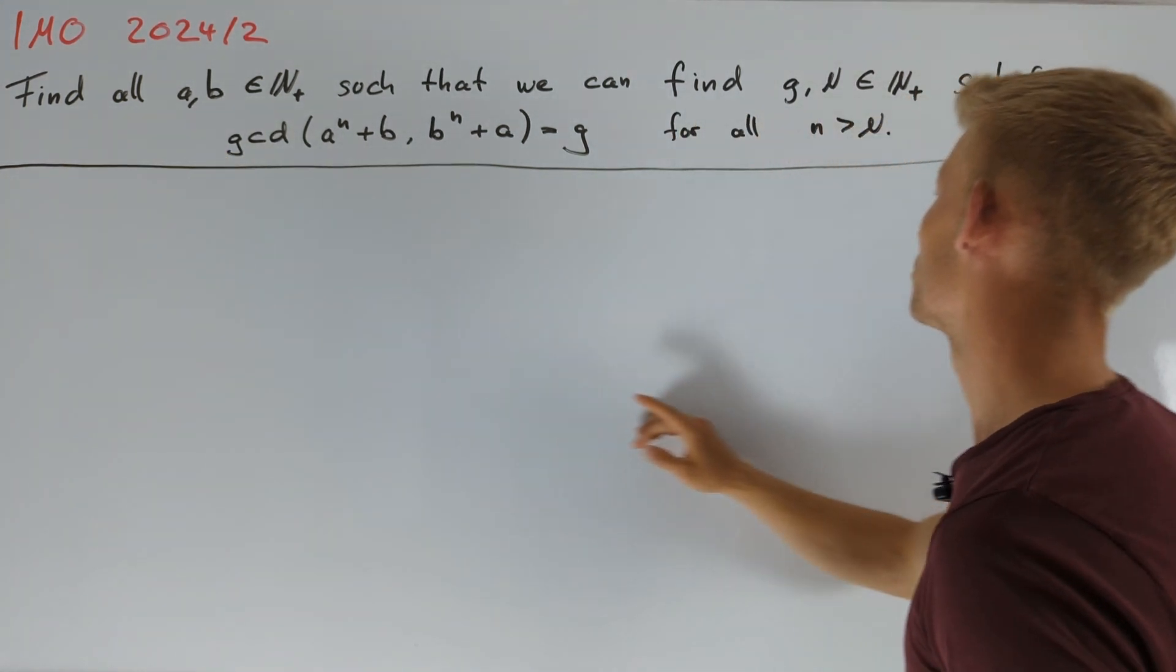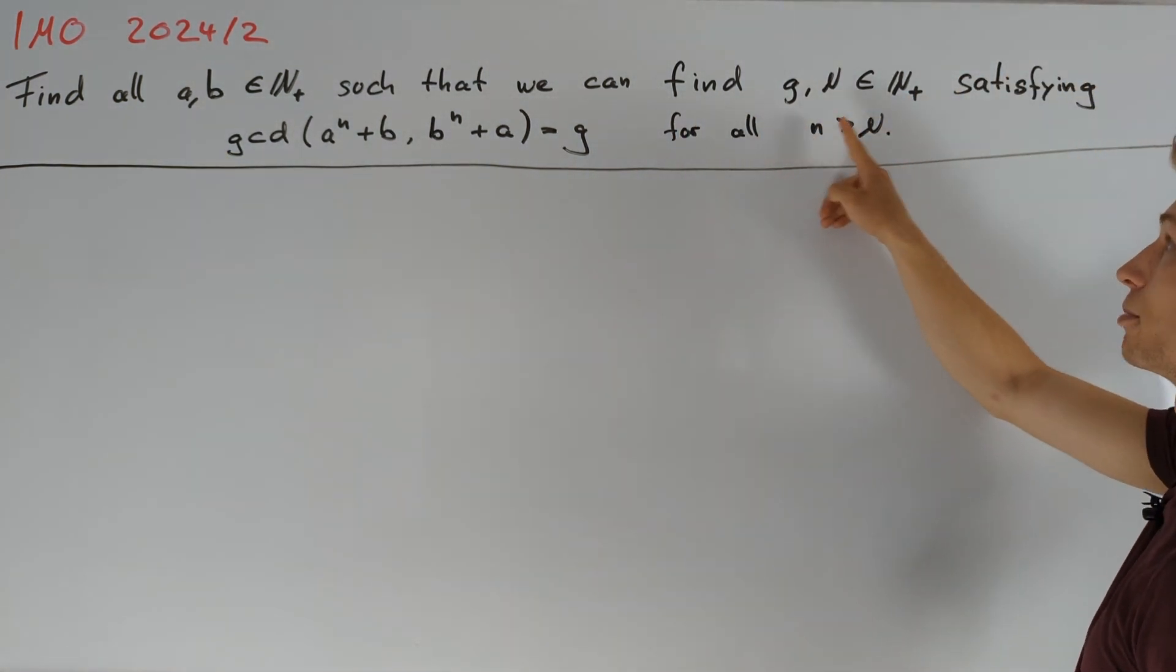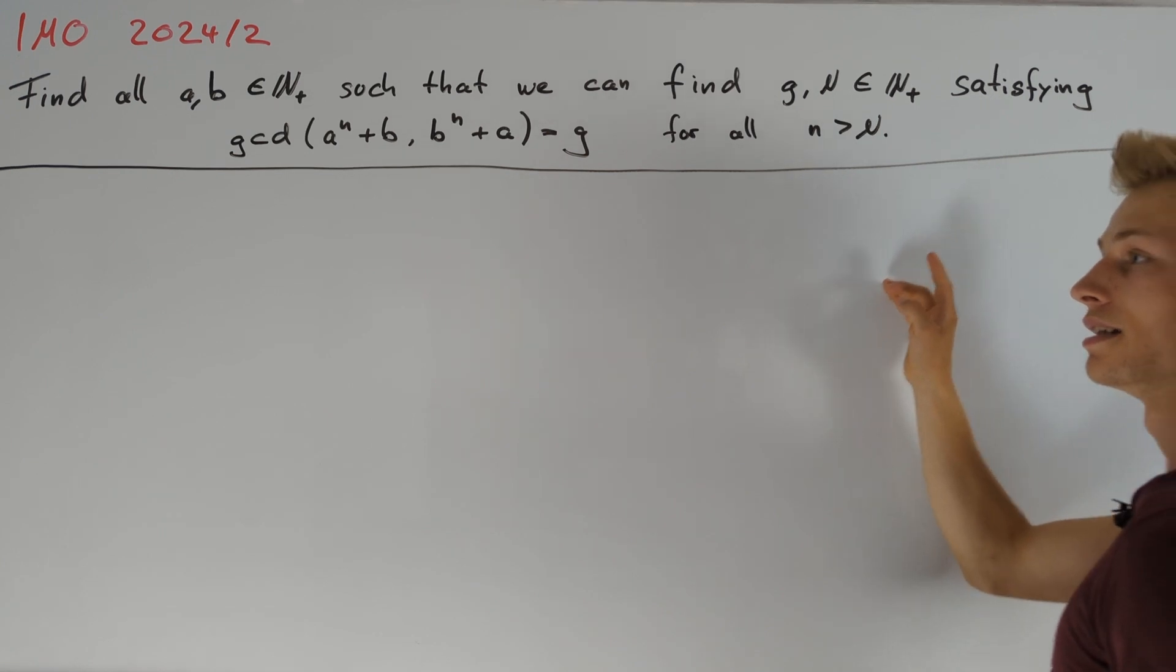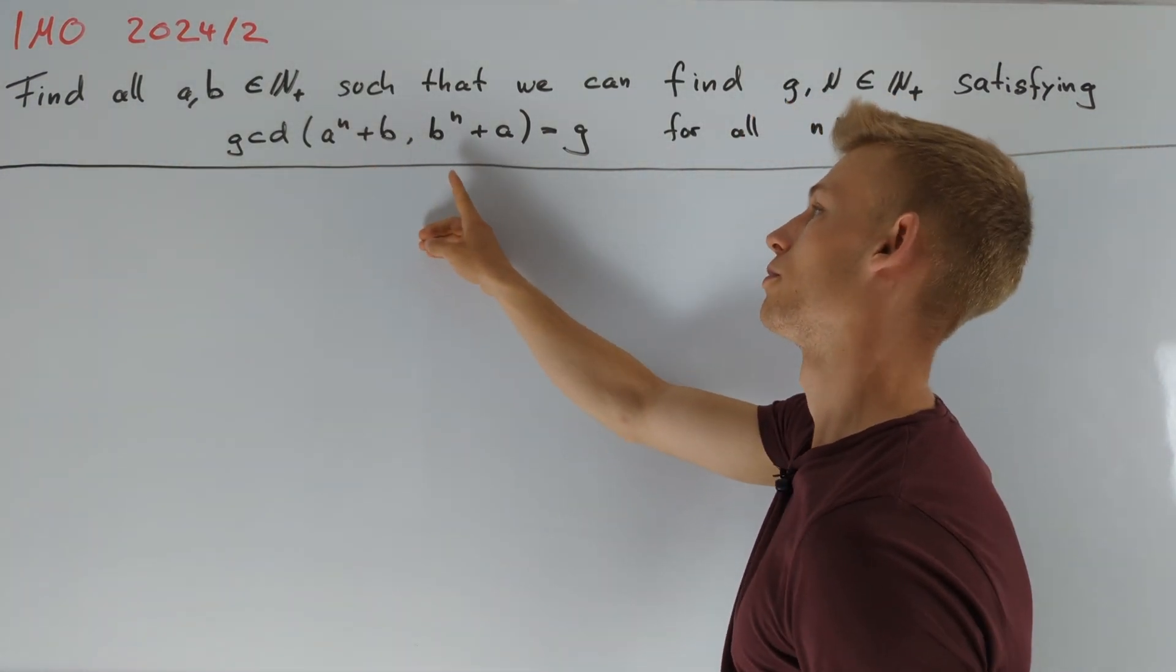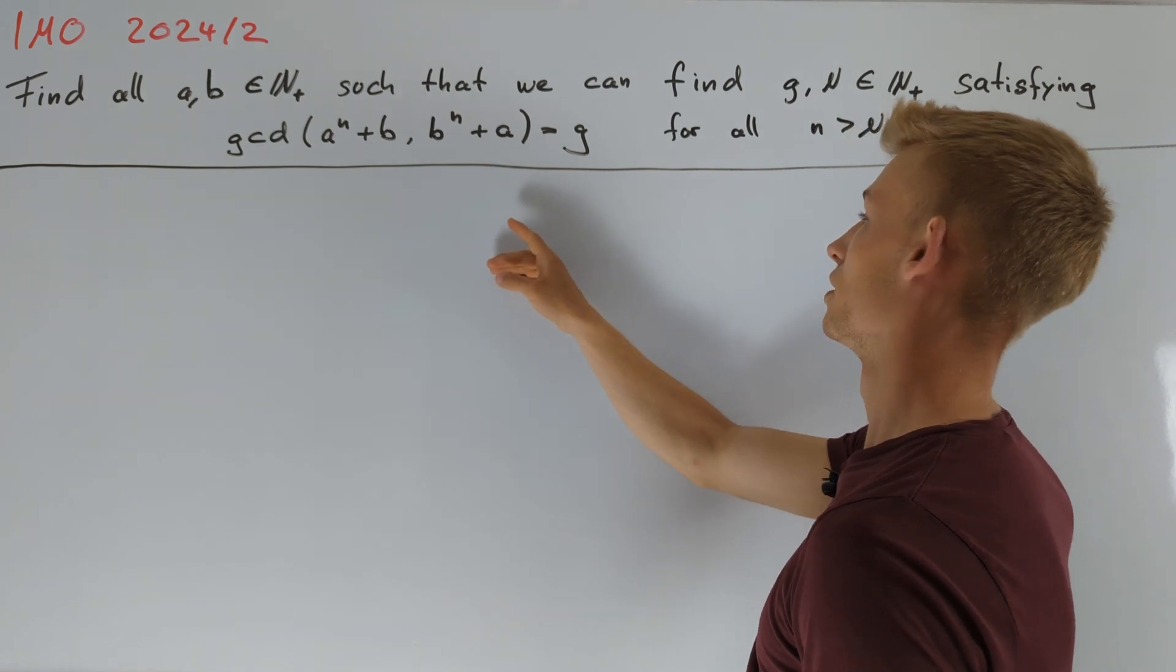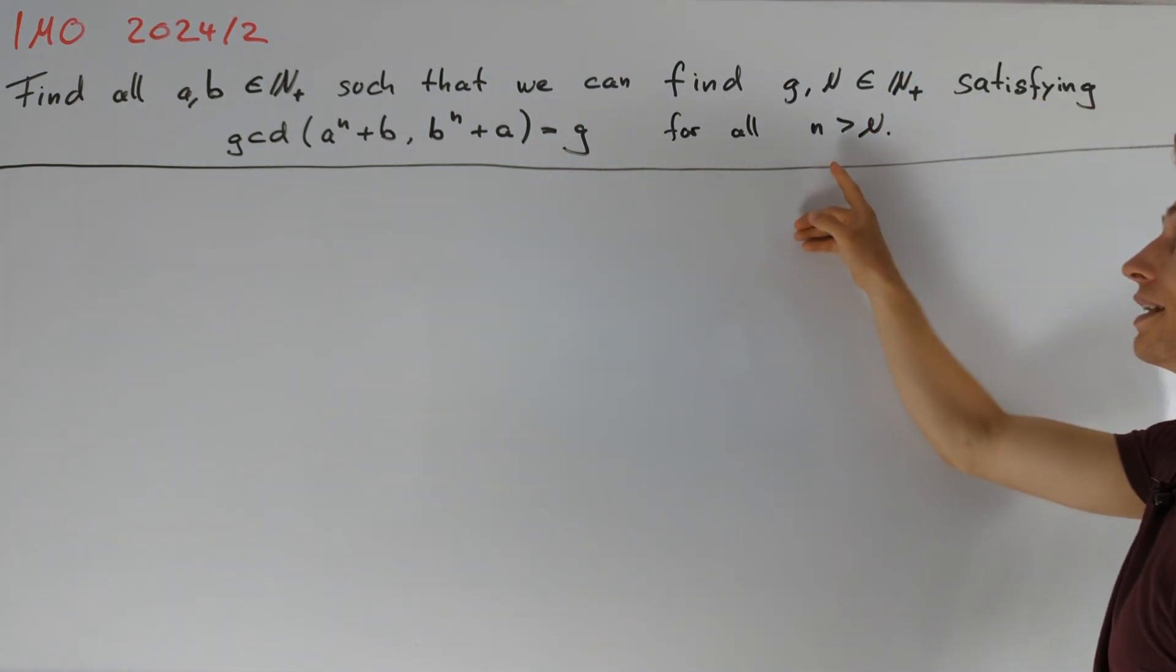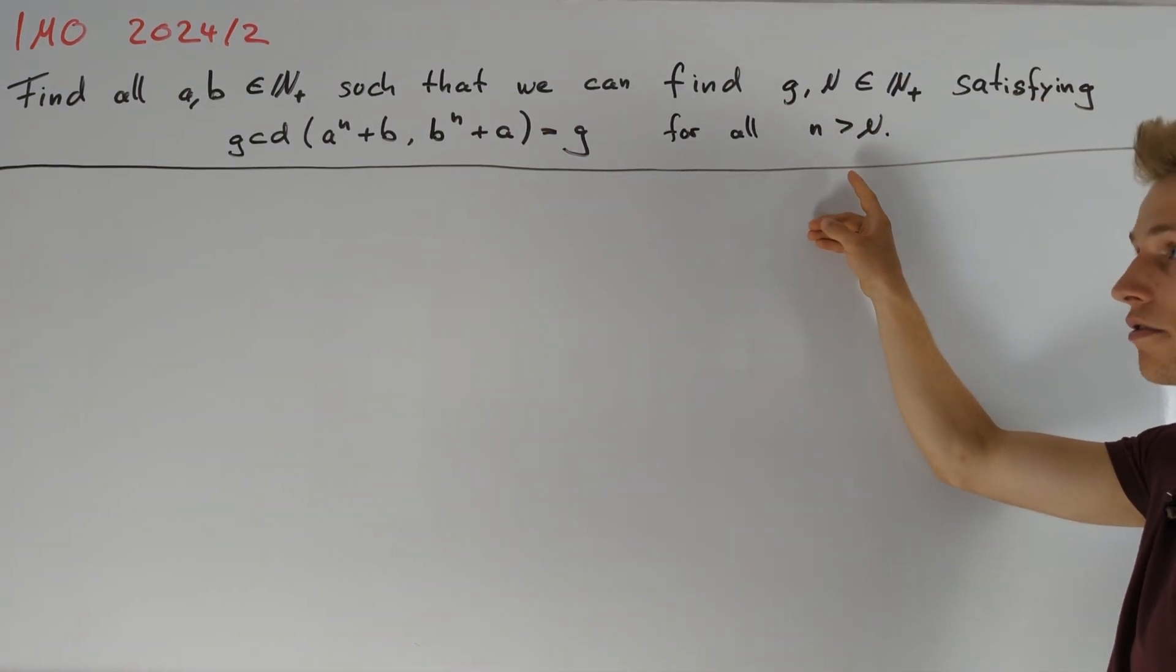such that we can find positive integers g and capital N satisfying that the greatest common divisor of a to the power of n plus b and b to the power of n plus a is equal to g for all n greater than capital N, so for all n large enough.